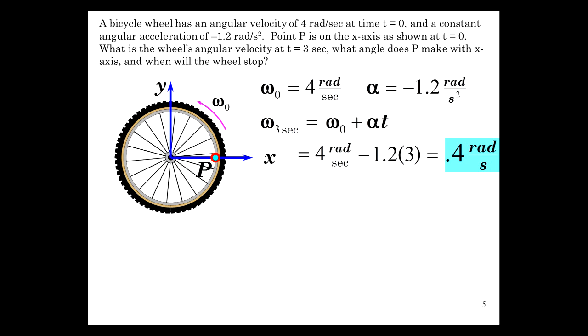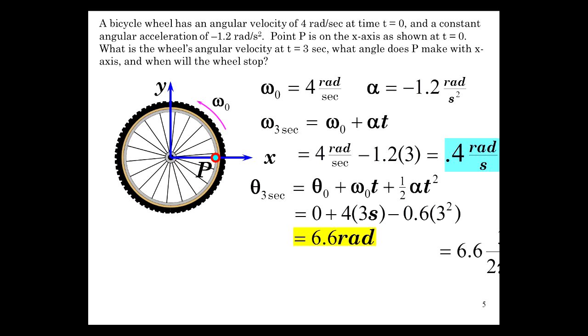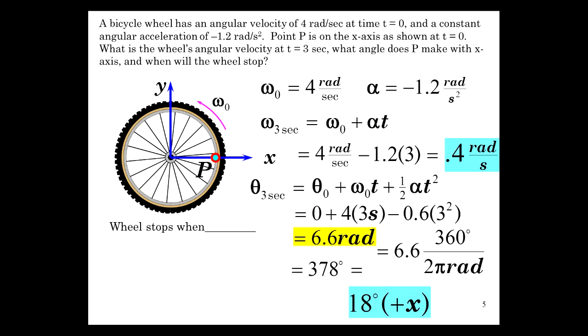Now what angle does it make? Well let's pull out a sufficiently potent angular position equation. That would be theta in 3 seconds is theta 0 plus omega 0 T plus 1 half alpha T squared. Theta starts at 0 degrees from the x-axis plus omega 0 T is 4 times 3 minus 0.6 times 3 squared is 6.6 radians. Look how fast that was. Well what's 6.6 radians? Oh, 2 pi radians is equal to 360 degrees. Let's go ahead and convert this to degrees because we're probably more familiar with it. So it's 6.6 times 360 degrees per 2 pi radians and that gives us 378 degrees. So it's one full revolution plus 18 degrees. So 18 degrees with respect to positive x is where this thing is going to end up.